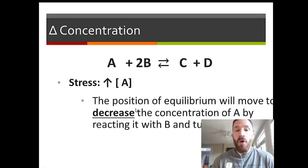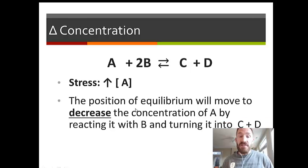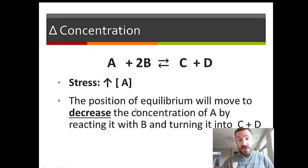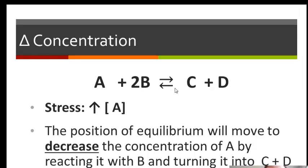When the stress is an increase in concentration of A, the position of equilibrium will move to decrease the concentration of A by reacting it with B and turning it into C and D. For each stress, we identify the stress, say which way it shifts — either right, left, or no change. Here, the stress causes us to react more A with B, increasing the rate of the forward reaction. We refer to the forward reaction as going to the right, so the shift is going to the right.